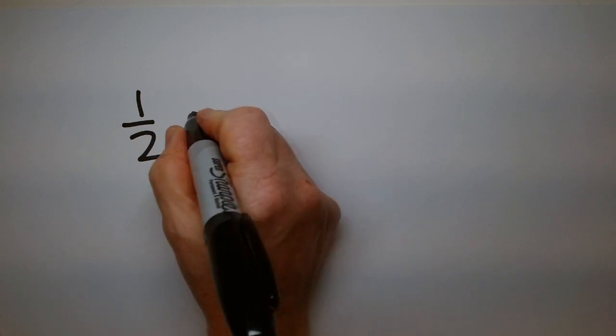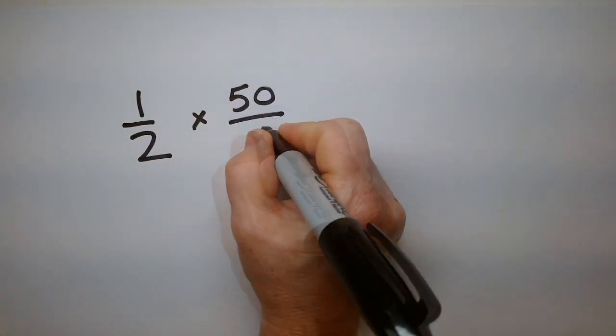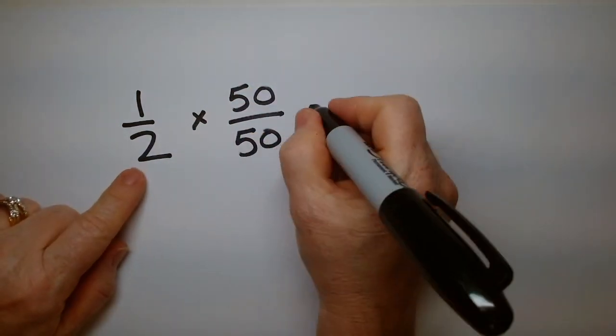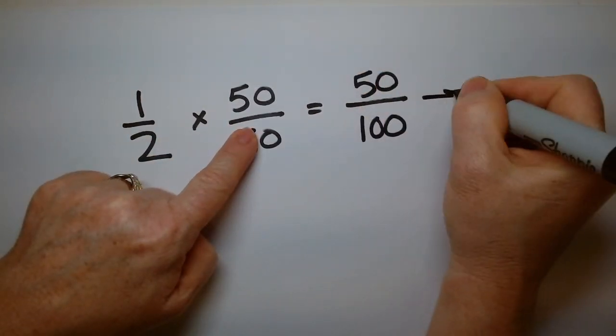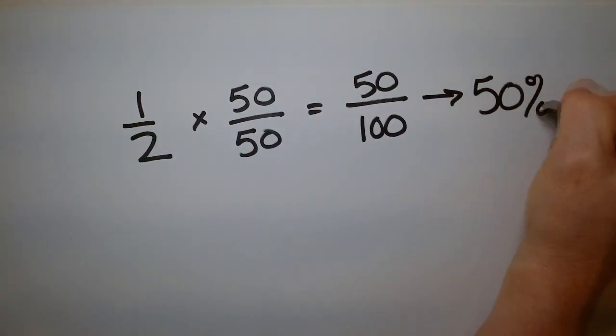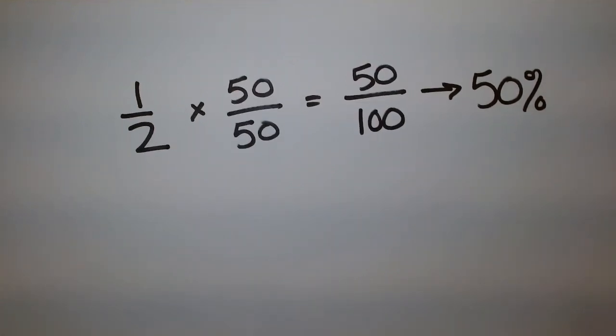So half looks like this. Now, a percent is a number where it's 100 on the bottom. So if we multiply top and bottom by whatever number I need to get the bottom to equal 100, suddenly the top becomes the percent. So that's 50%. 50% is a half.